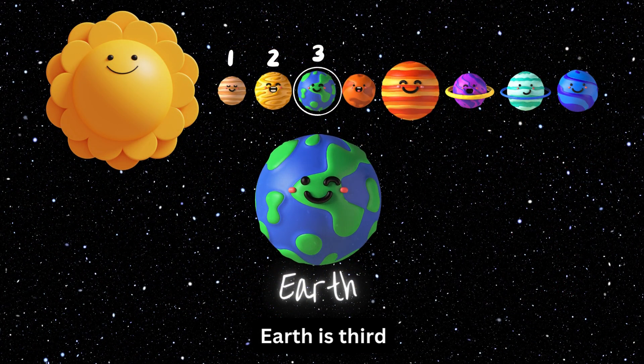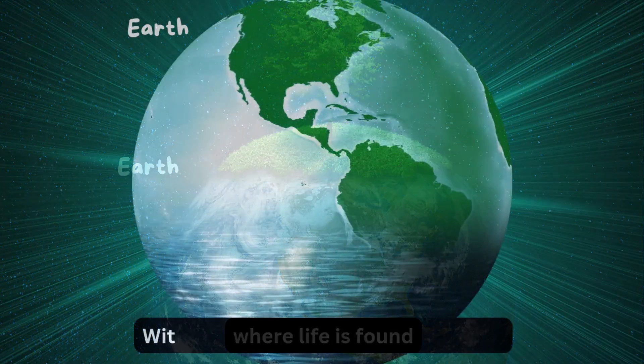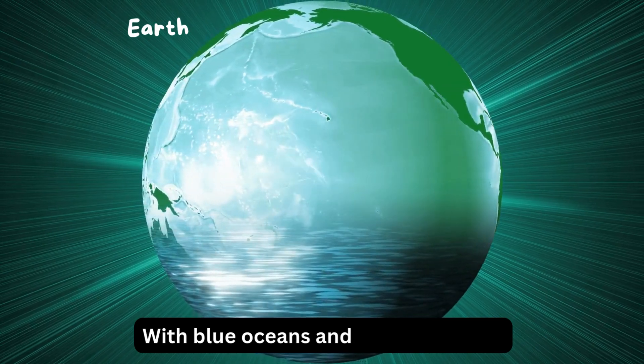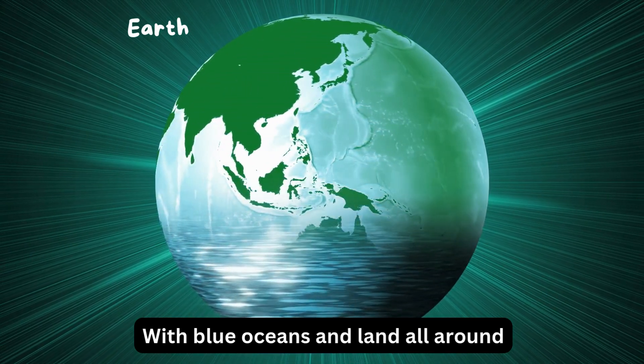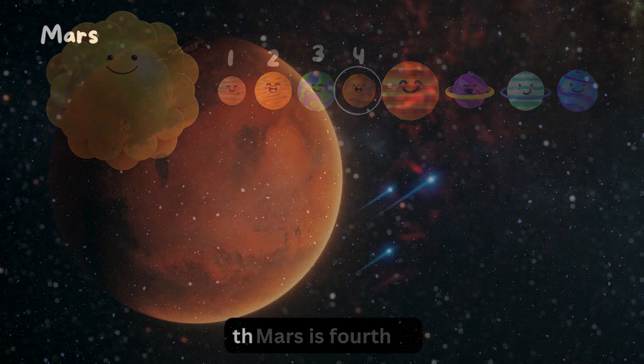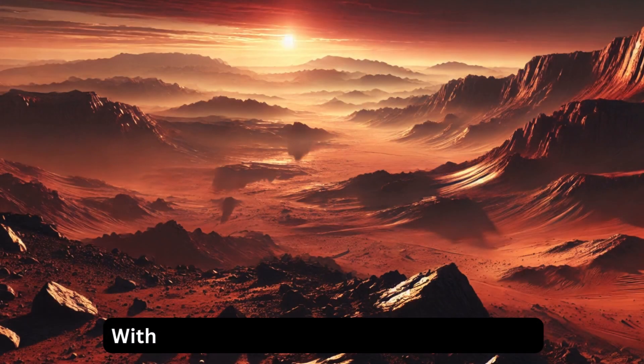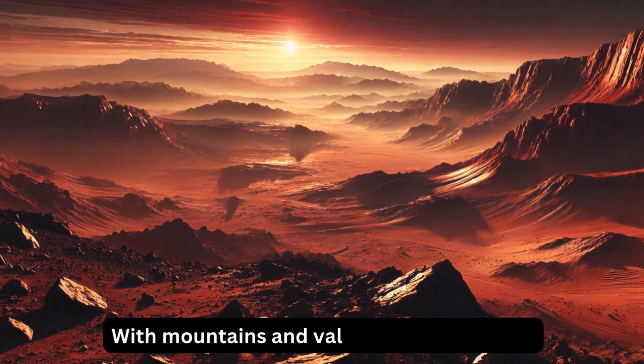With blue oceans and land all around. Mars is fourth, the red desert star, with mountains and valleys seen from afar.